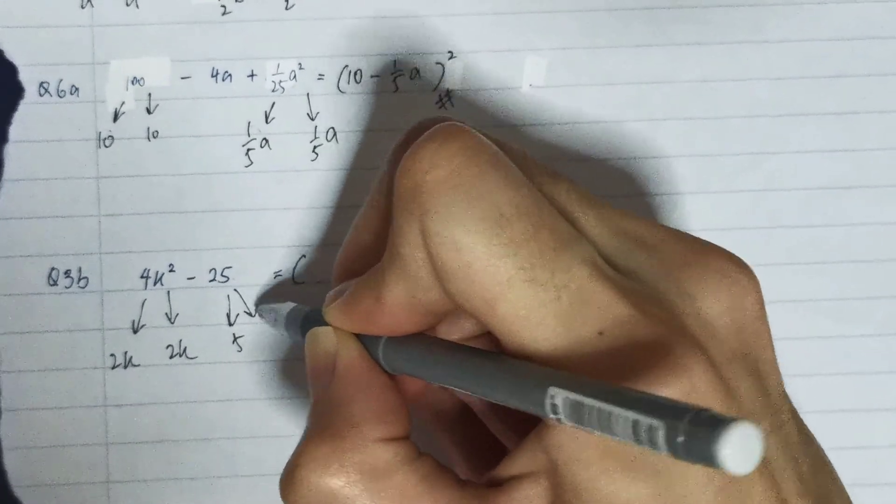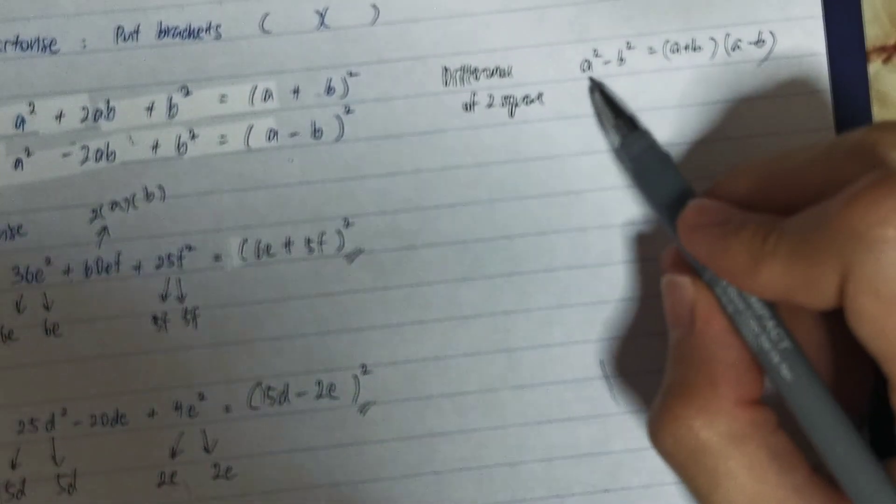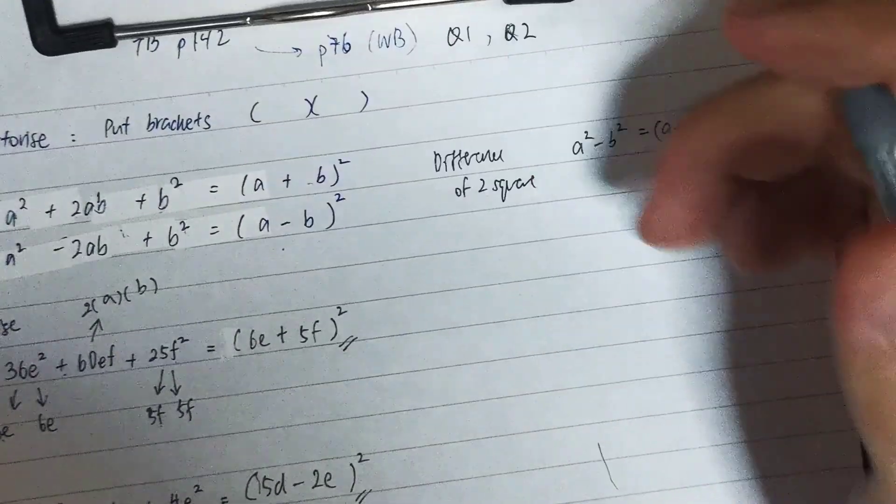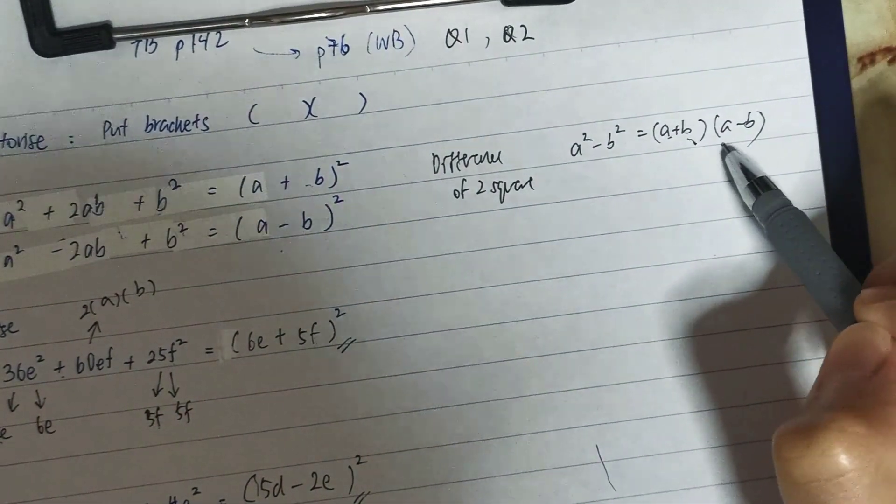And this 25 is made out of 5 times 5. So how do I write it? It will be in this format a² - b². So it's (a + b)(a - b).